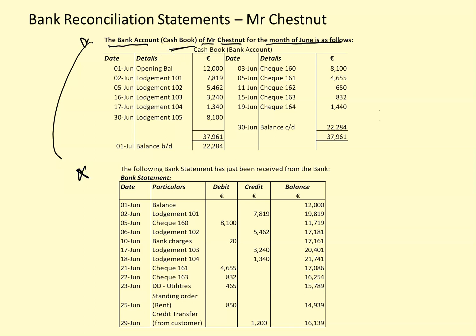Moving down, the following bank statement has just been received from the bank — again for the month of June. This represents the record of the bank's dealings with Mr. Chestnut. Looking at the balance on Mr. Chestnut's records, we can see the balance at the end of June, 1st July, is 22,284.